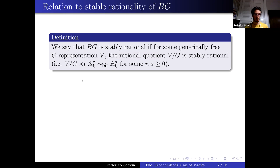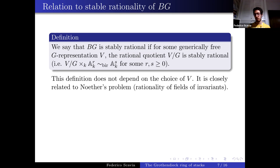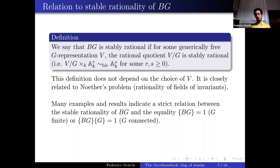The definition does not depend on the choice of V; this is the no-name lemma. It is closely related to Noether's problem — the one relevant to the inverse Galois problem. Noether was interested in rationality for the regular representation; here we're only interested in stable rationality. Many examples show a strict relation between stable rationality of BG and the equalities: [BG] = 1 when G is finite, or [BG] = [G]^{−1} when G is connected.